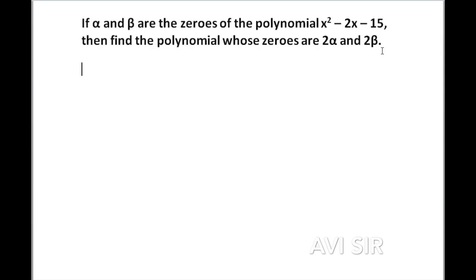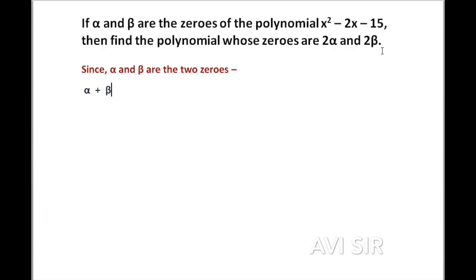When alpha and beta are given as the zeros, the first thing we have to do is find alpha plus beta and alpha into beta. Since alpha and beta are the two zeros, alpha plus beta equals minus b by a, which is the negative of the coefficient of x divided by the coefficient of x squared.